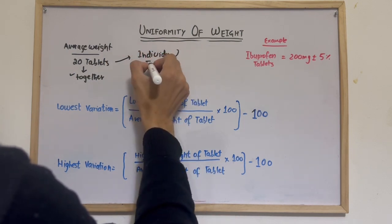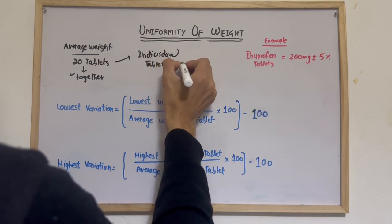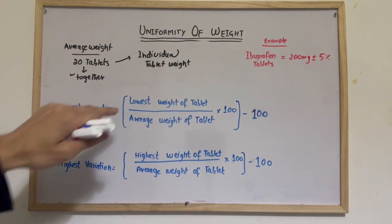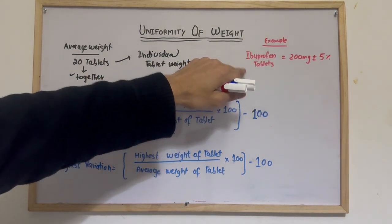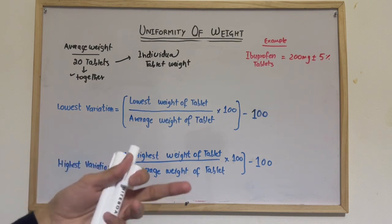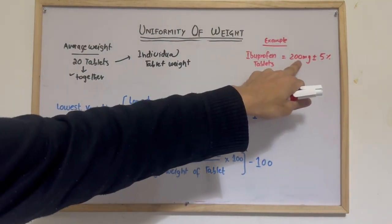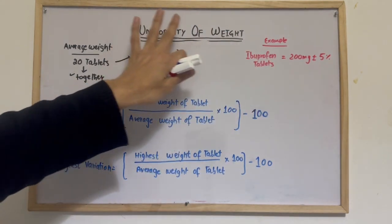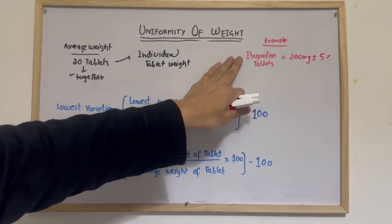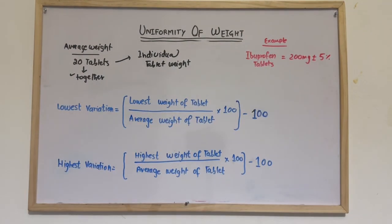You have to weigh 20 tablets individually. Let's say we have ibuprofen tablets — ibuprofen comes in different strengths. For one strength, the average weight is 200 mg, and the uniformity parameter given in the specification is ibuprofen 200 mg plus or minus five percent.